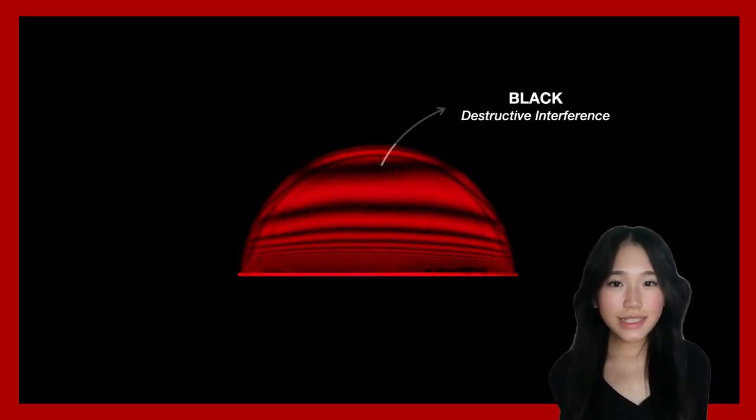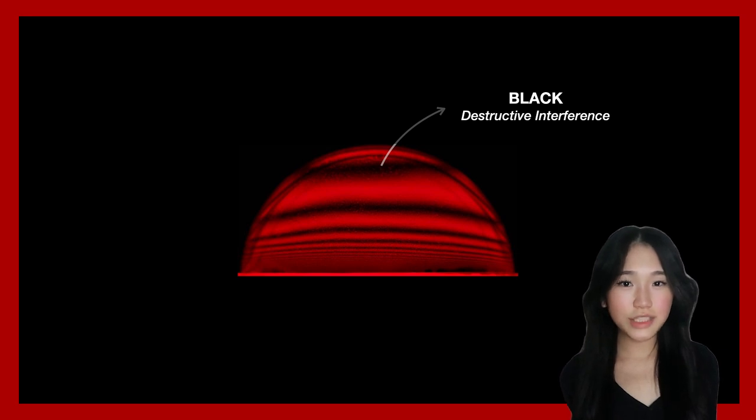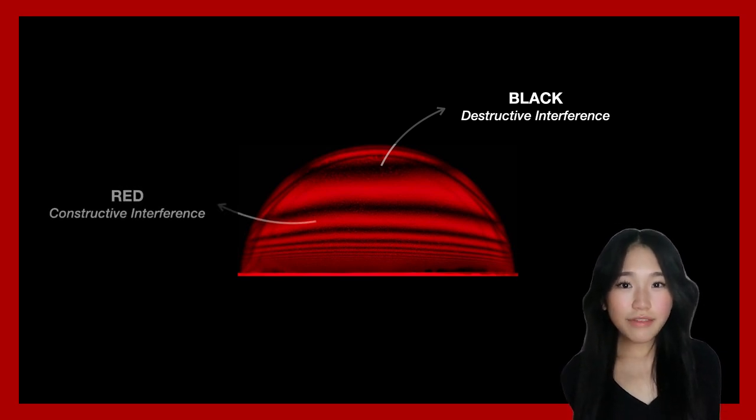To further understand how the thickness of the film affects the colors observed let's illuminate a soap bubble with pure red light. The dark bands indicate the thicknesses of the film where the red light waves destructively interfere and cancel out. The vividly red areas indicate where the soap bubble has a thickness that is an integer multiple of the wavelength of red meaning that there will be constructive interference.